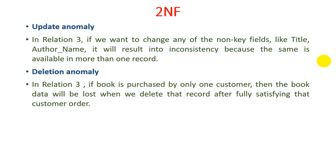Now we understand what is a deletion anomaly. In relation R3, if a book is purchased by only one customer, then the book data will be lost when we delete that record after fully satisfying that customer's order. If only a single record is available in the database and we delete it under some condition, then the complete data is deleted. For example, if there are three books in the store and book number 3 is purchased by only one customer, and that customer does not purchase, then we cannot find how many books are available. That is the deletion anomaly.